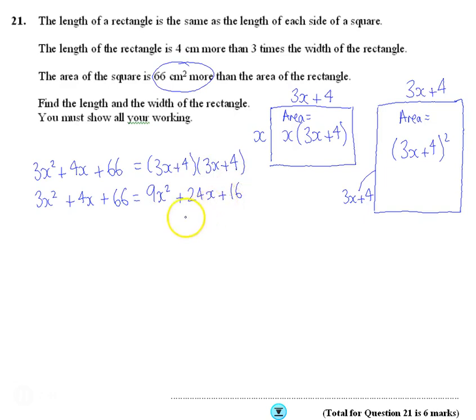And then I'm going to collect everything together. And because this has got the most number of x squared, this is 9x squared, this is only 3x squared, I'm going to collect everything on the right-hand side. So 9x squared, take off 3x squared, 6x squared. 24x minus 4x is 20x. 16 minus 66 is minus 50.